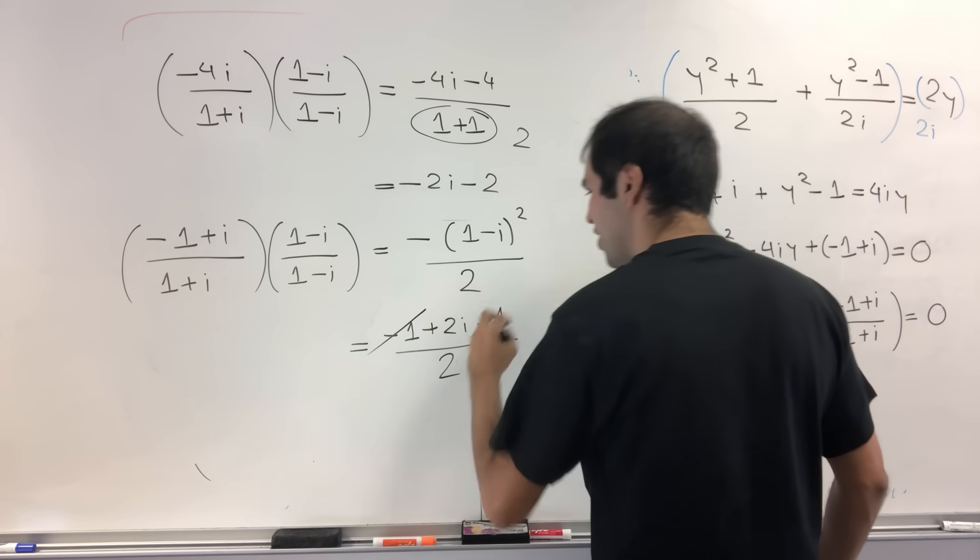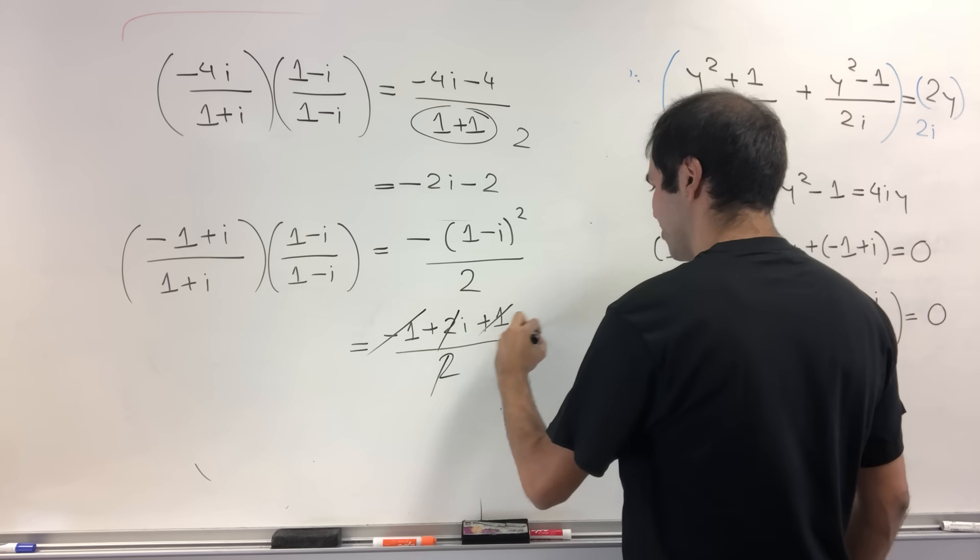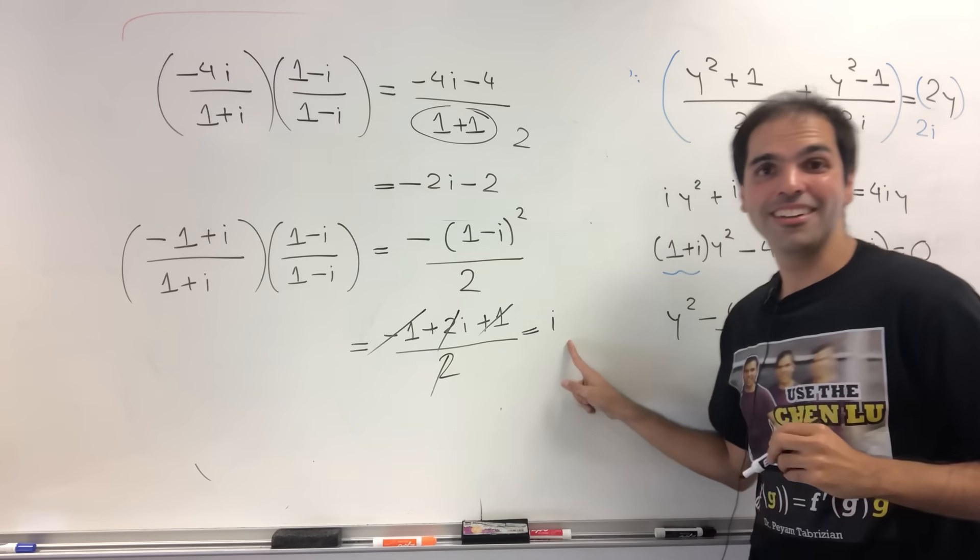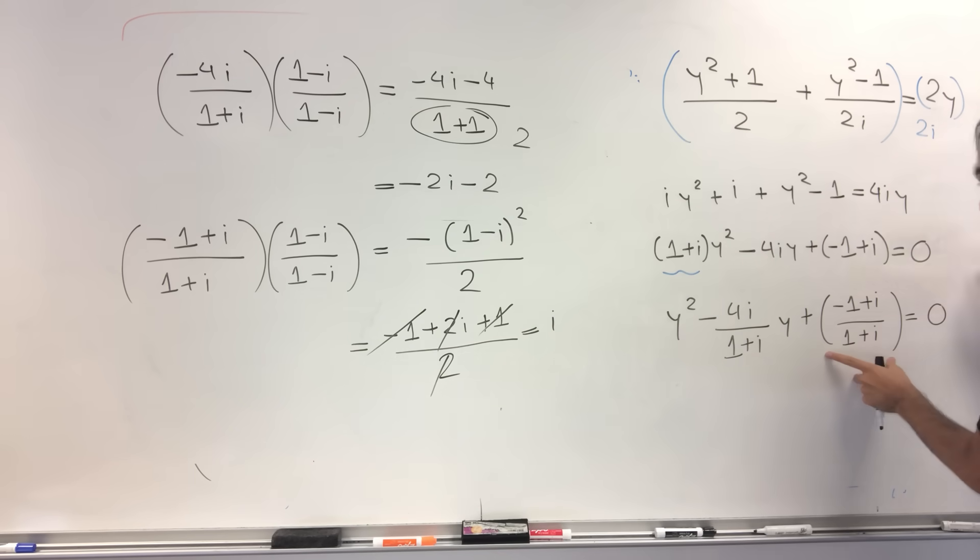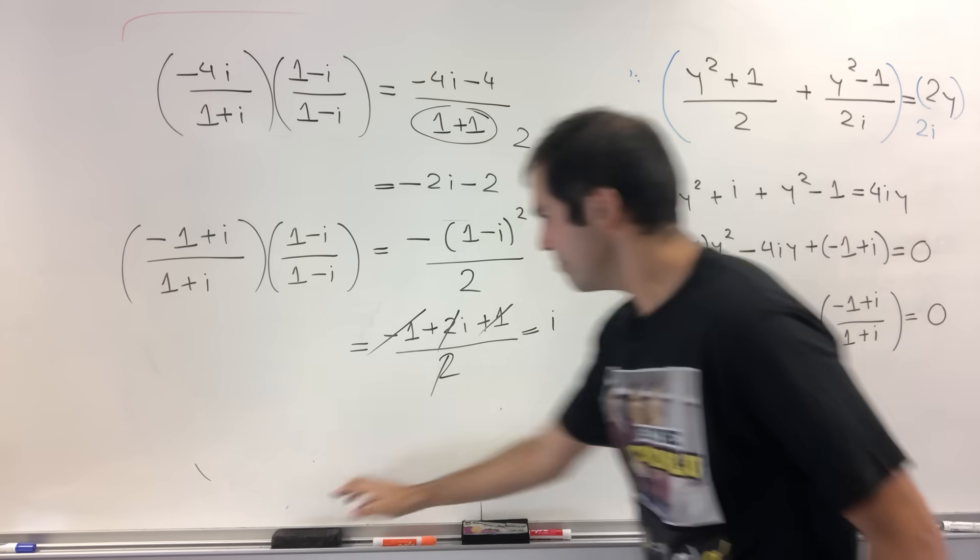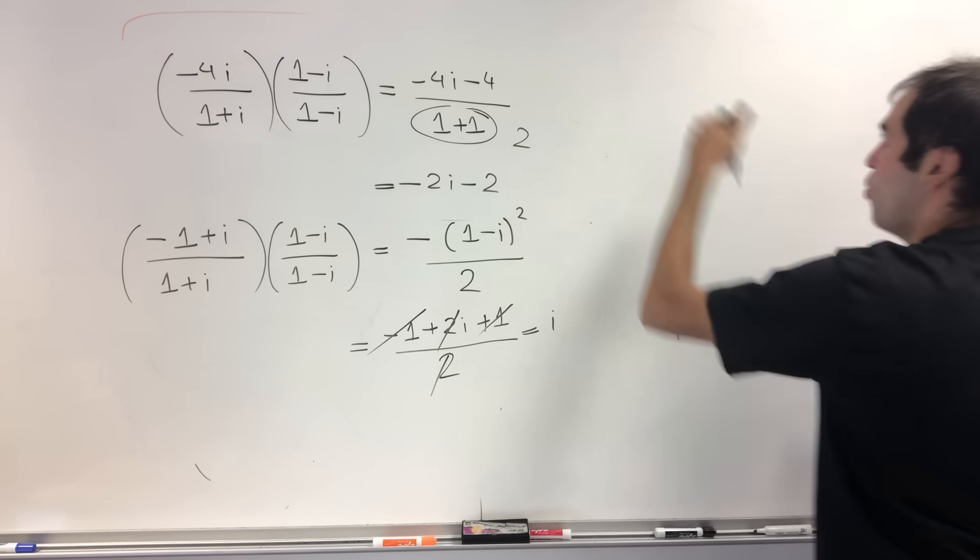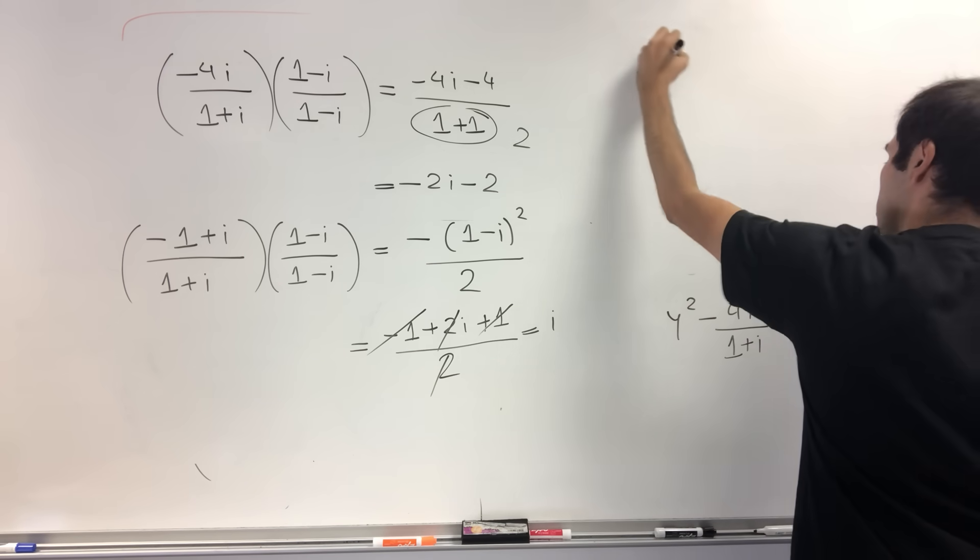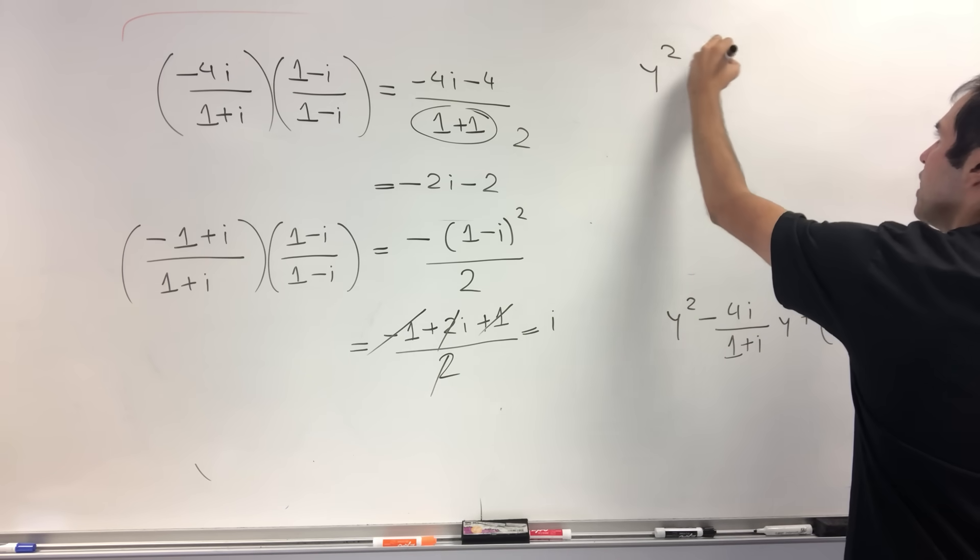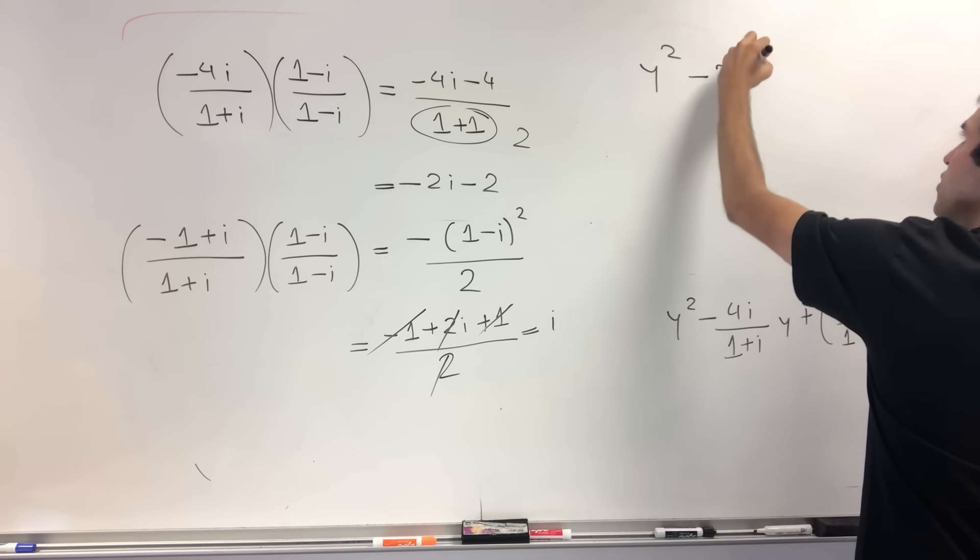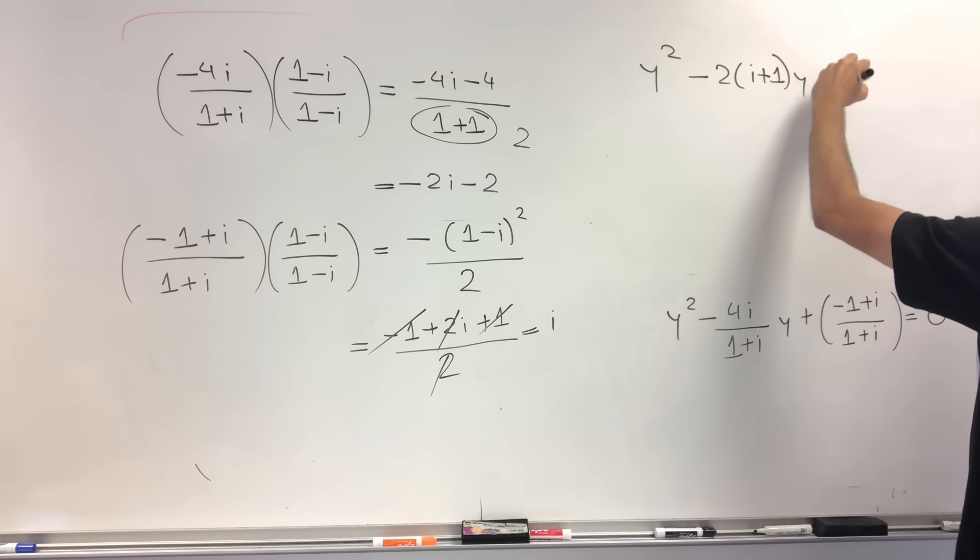So +1 divided by 2, and abracadabra, alakazam, this becomes, this goes away, and then 2i/2 also goes away. And in the end, we get i. And I approve of this because i is much easier than this fraction here. So in the end, what does this simplify to? Well, we have y² minus (2 + 2i)y, which you can just write as (-2 - 2i)y, and at the end, i equals 0.